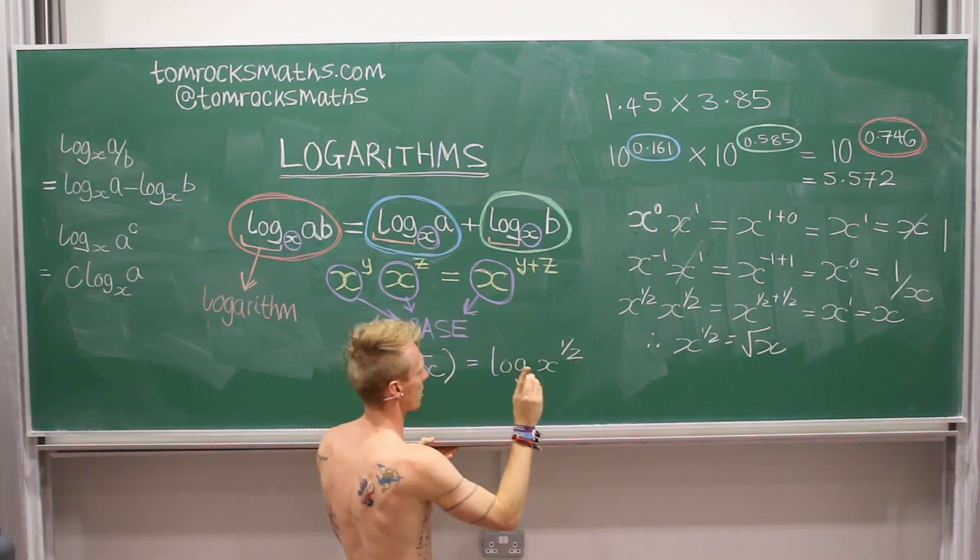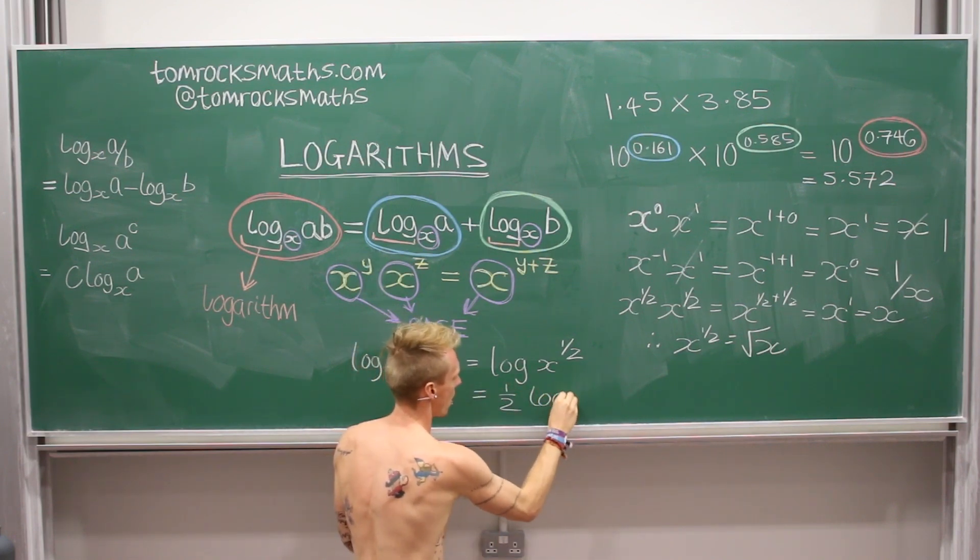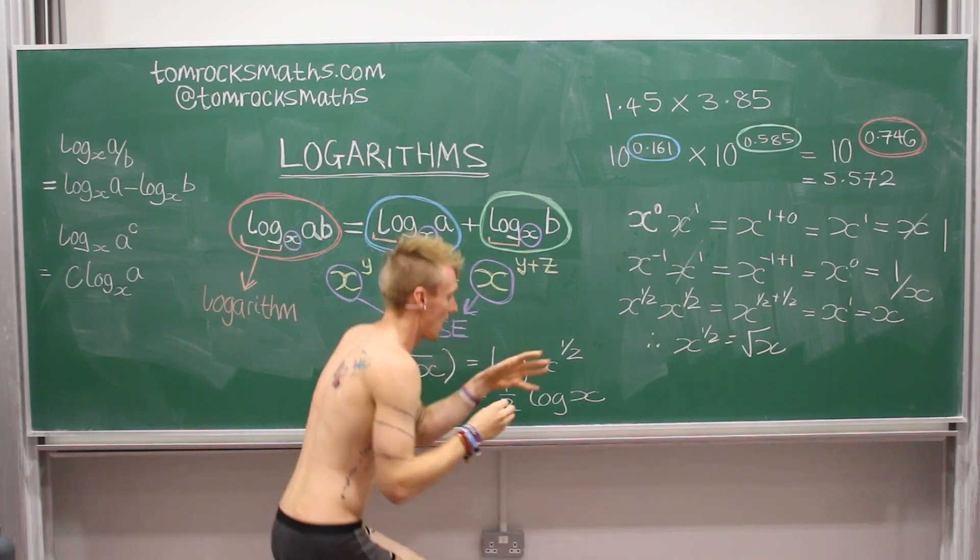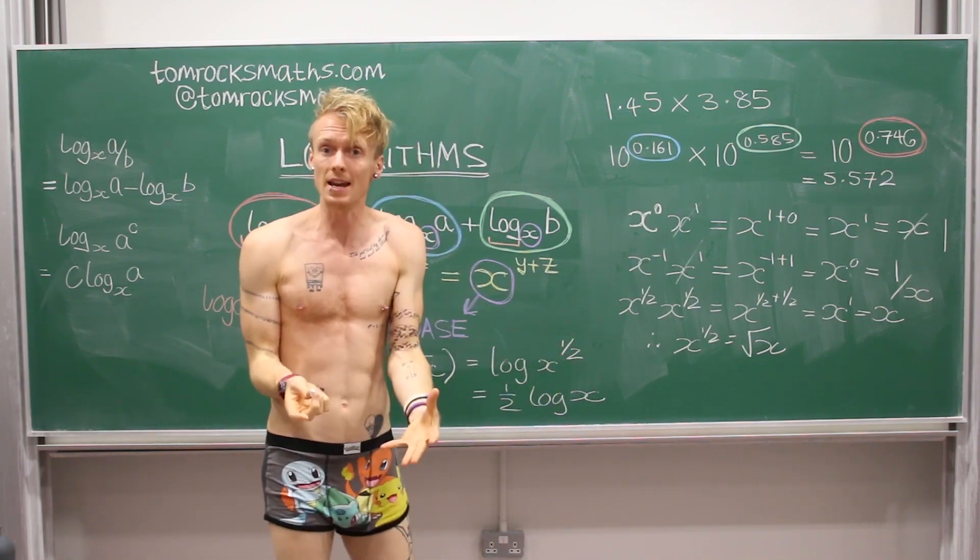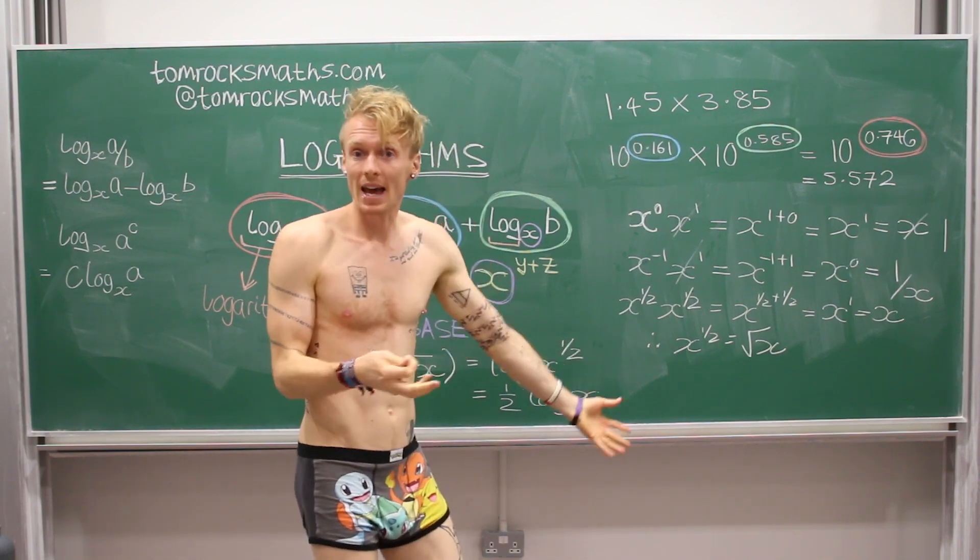And so we can just look up in a table what the logarithm of a particular number is in, say, base 10. And then we just take a half of that number and we have our square root.